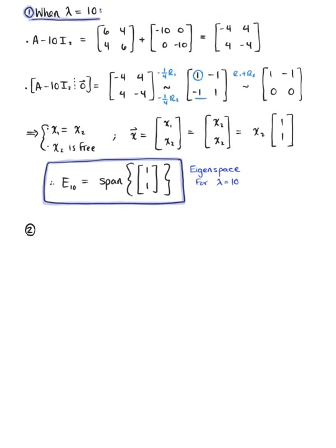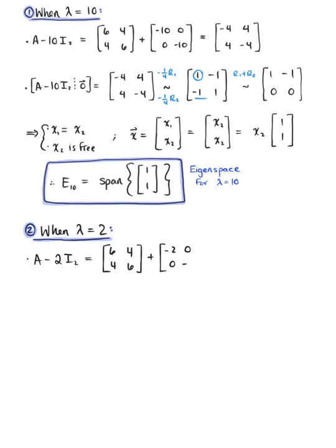Now for case 2, when λ = 2, we find matrix A minus 2 times the identity: [6,4;4,6] + [-2,0;0,-2] = [4, 4; 4, 4]. We augment this matrix with the zero vector to find the null space.